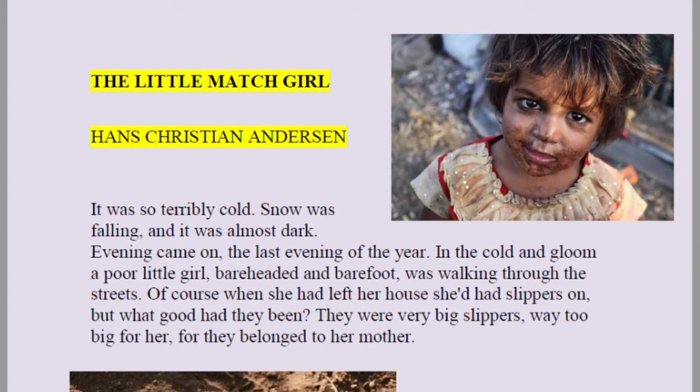Charles Dickens's Oliver Twist features another such young child deprived of everything a child requires. Similarly here, the little match girl is not given any particular name — we don't call her Seetha, Geetha, or anything. No specific name is assigned to her throughout the story.